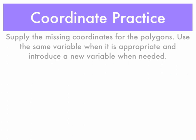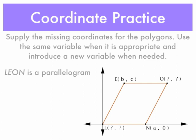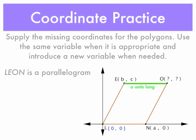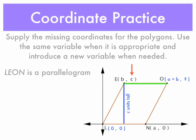Let's try another. Here we have LEON, which is a parallelogram, and we have a few missing coordinates. We know right off the bat that L is at (0, 0). Then, because opposite sides are congruent, if LN is A units long, then EO is also A units long. Because E has an X coordinate of B units, that length is B units long, so O has an X coordinate of A plus B units. Then, if we look at the C on point E, that length is C units tall, which indicates O is also C units tall.